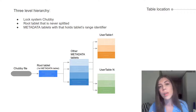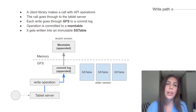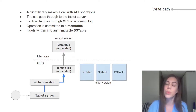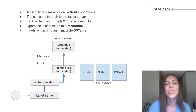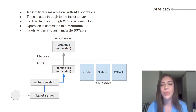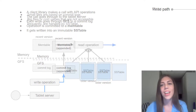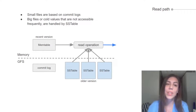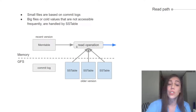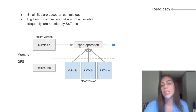A server simply queries the metadata for a failed tablet. Regarding the write operation: the client library makes a call with the API operation, which goes through the tablet server whose location was previously explained. Each write goes through a commit log. The operation is then committed to a sorted buffer called the memtable, and when it grows in size it gets written into an SSTable and a new memtable is created. For the read path, Bigtable uses the commit log for small files and uses SSTables for large files and infrequently accessed values.